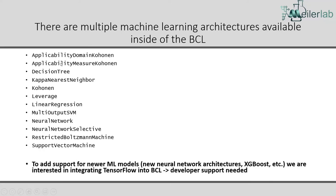The other method you'll sometimes use in conjunction with neural networks is something to indicate what sort of space your model has been trained on — that would be applicability domain Kohonen or applicability measure Kohonen. These are different measures of the training space of your model. Eventually we'd like to add support for newer machine learning models such as XGBoost, random forest, and TensorFlow, but we need developer support for that.